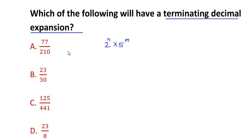For example, let us look at option A, that is 77 over 210. Now if you find out the factors of 210, we can see that it is nothing but 3 times 7 times 2 times 5. That is 3 times 7 is 21, and 21 times 10 gives you 210. Now along with 2 and 5, we also have 3 and 7.